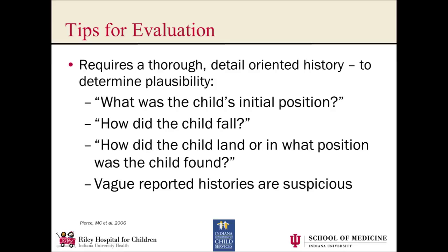For example, not enough to say 'Johnny fell down the stairs.' You've got to ask in a little more detail: what was Johnny's position when he fell? What did the fall look like? How did he land? What position did you find him in? In studies looking at plausibility in kids with accidental stair falls, the caregiver could almost always give a very graphic description of, at a minimum, how the child fell or the position he landed in. The vaguer the history, the more suspicious you need to be about abuse.